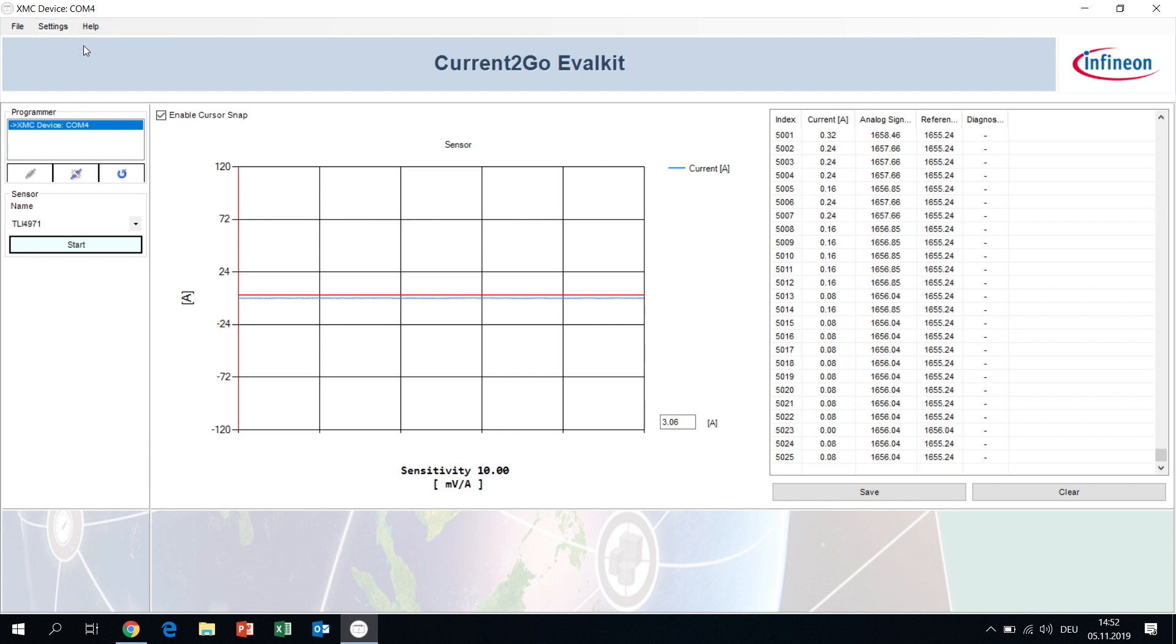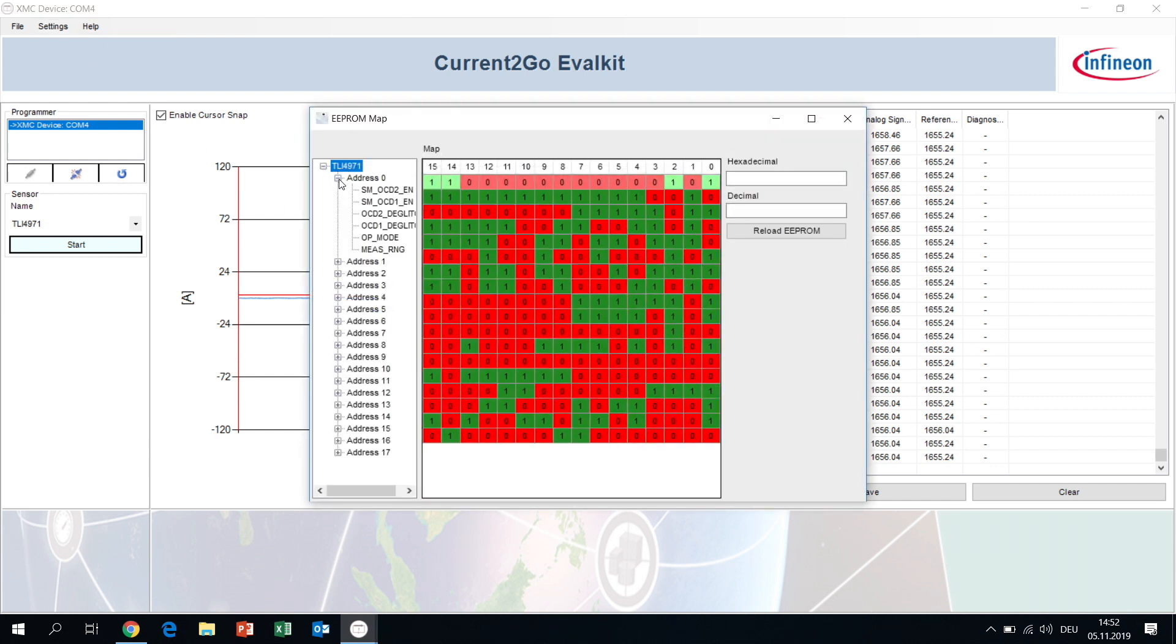So for example here at register zero we have the settings for the OCD, the overcurrent detection, the operating mode and the measurement range.